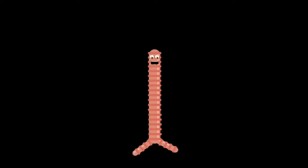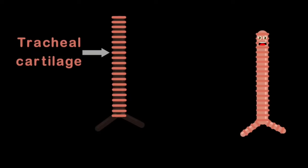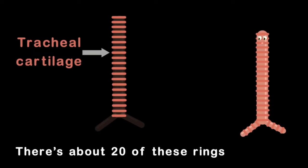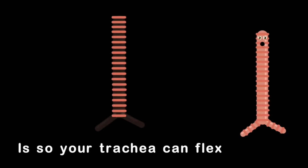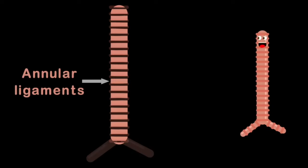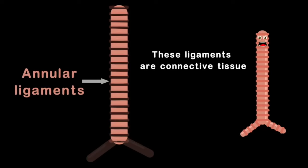Let's talk about my parts now that my functions are clear. We'll name off my anatomy as they appear. The rings on me are tracheal cartilage — there are about twenty of these rings that are separate on me. The reason they are separate and not joined as one is so your trachea can flex till your breathing is done. Then we move to the space between the cartilage — these are your annular ligaments, connective tissue holding the trachea together inside you.